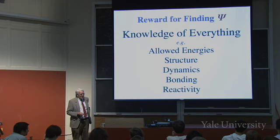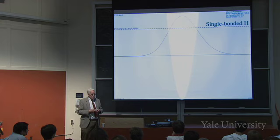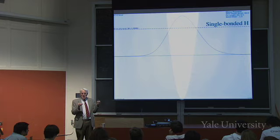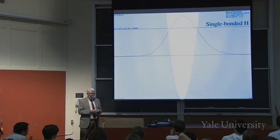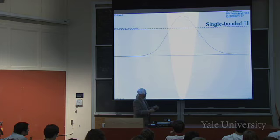The reward for finding ψ was the knowledge of everything. We've seen allowed energies and structure. Now: suppose a proton is attached by a bond to something heavy. The heavy thing doesn't move; the hydrogen does. Here's its wave function — the bond distance is the minimum energy; stretch or compress the bond and energy goes up. That's the wave function for the position of the hydrogen atom.